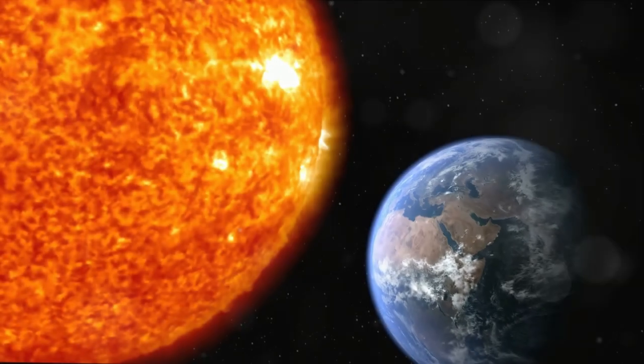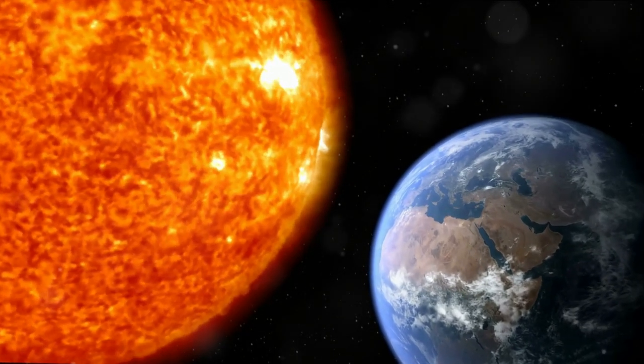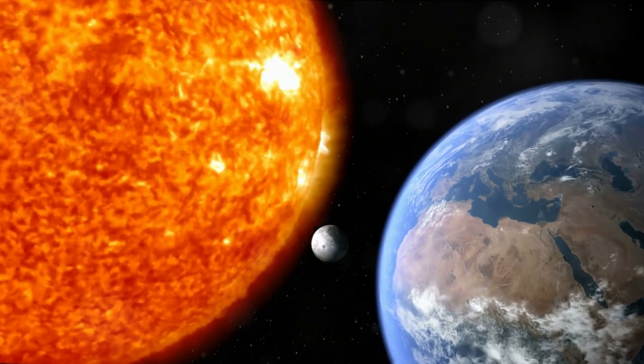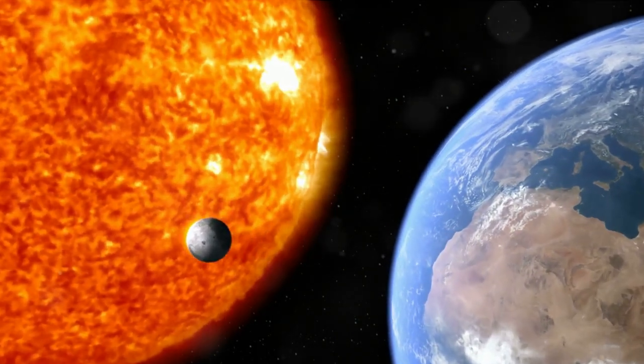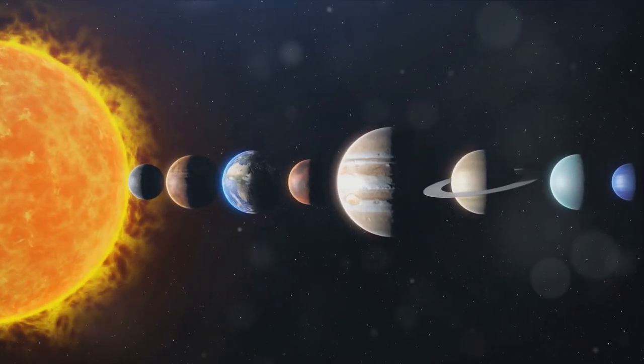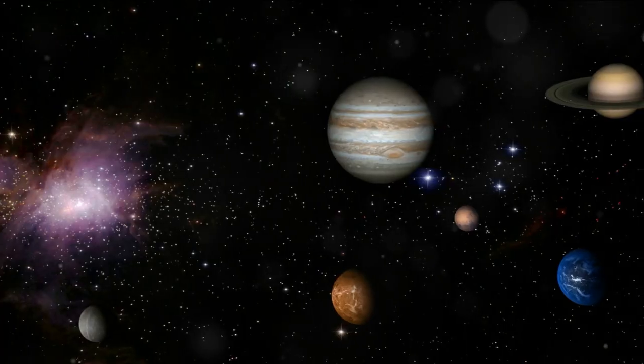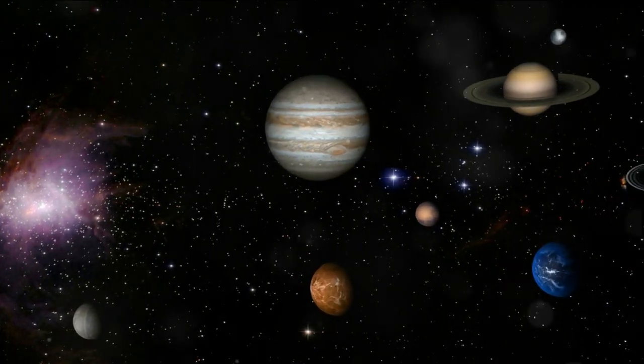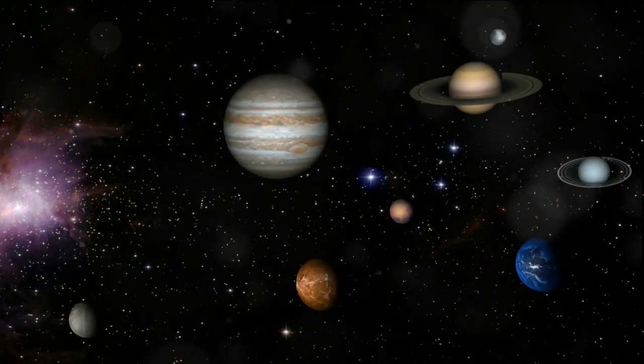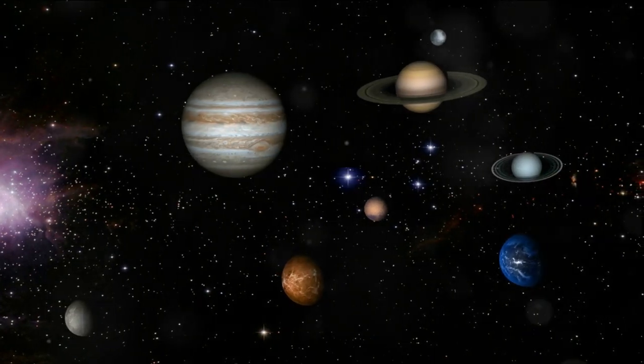Earth's also a marathon runner orbiting the sun in 365.25 days. Picture our planet as a determined athlete, tirelessly circling the sun in a race that never ends. This orbit isn't just a solo performance, though. It's a cosmic ensemble with all other planets in our solar system, each running its own unique race around the sun.